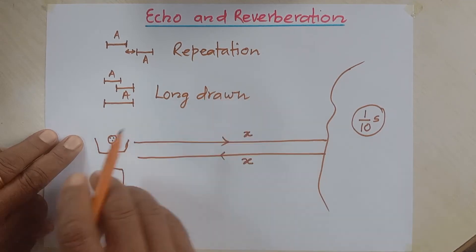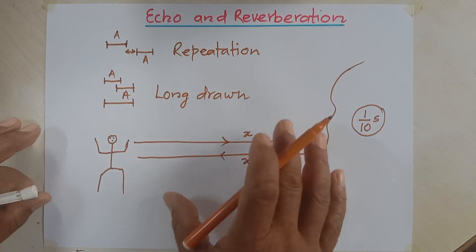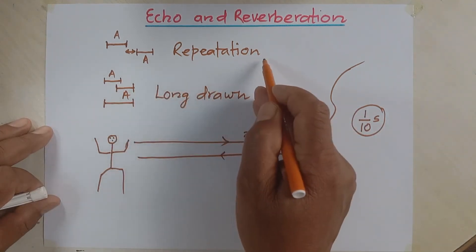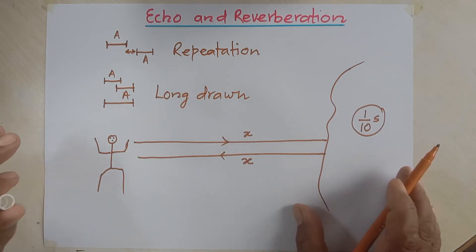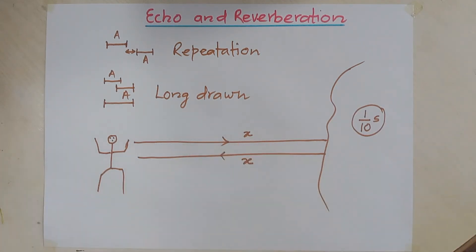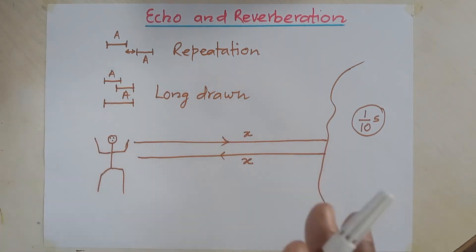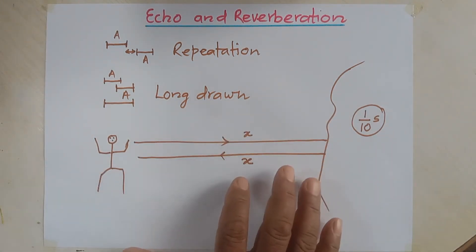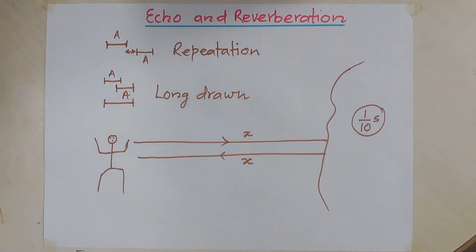The long drawn effect of sound due to the reflection of sound is called reverberation. The repetition of sound due to the reflection of sound waves is called echo. But the long drawn effect of sound due to the reflection of sound waves is called reverberation. Now in which conditions will we see echo and reverberation? Let's go through the distances.